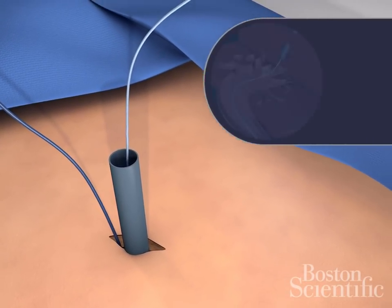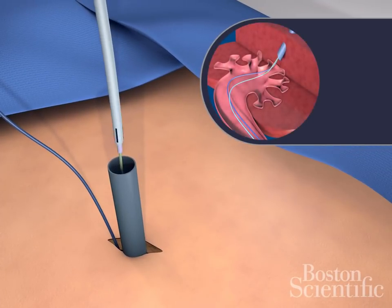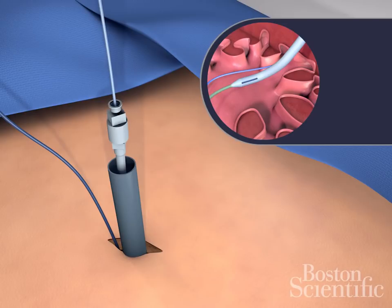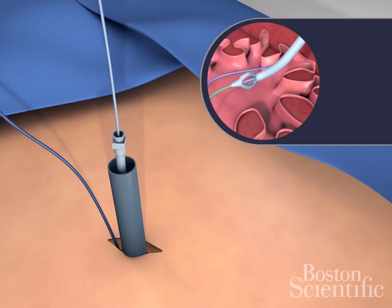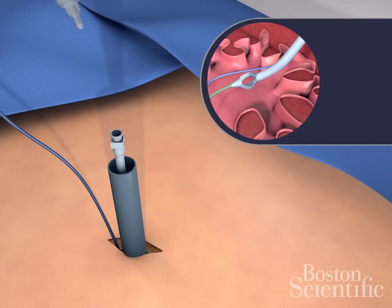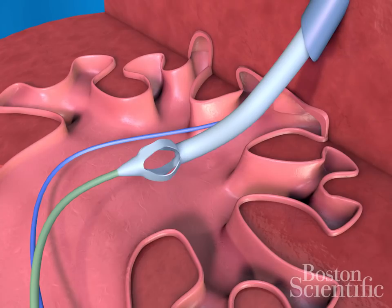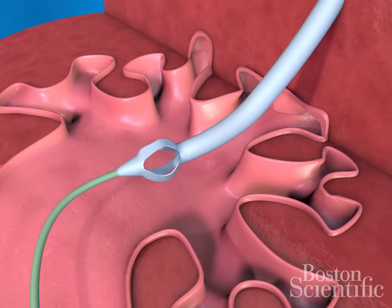Insert the nephrostomy drainage catheter into the sheath over the working channel. Remove the inner stylet from the catheter to enable the catheter to open inside the kidney. Remove the stiff working wire from the catheter. Using the syringe, inject contrast through the catheter to confirm its proper placement on X-ray. Remove the renal sheath and the remaining guide wire to complete the procedure.